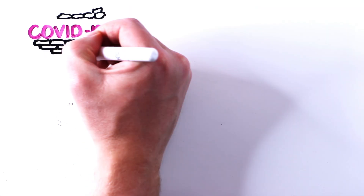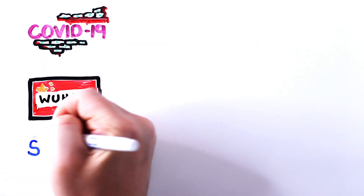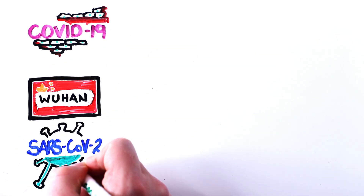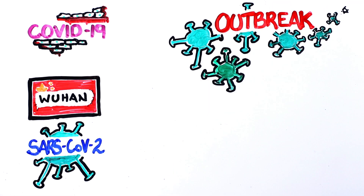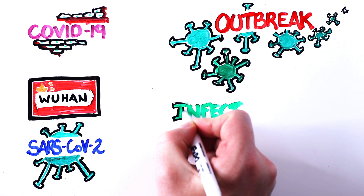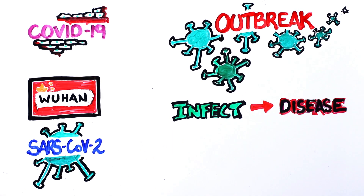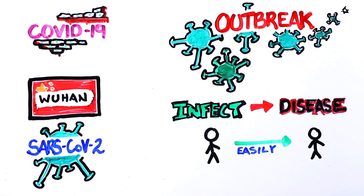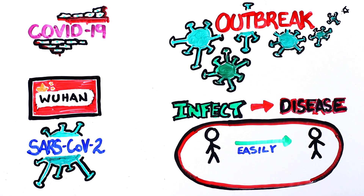In order for a pandemic to occur, it needs to start with an outbreak. If we look at the disease COVID-19, the outbreak occurred in Wuhan, China, from the SARS-CoV-2 virus. A viral outbreak requires a new virus that humans do not have immunity to, that is able to infect humans, cause disease in humans, and spread from human to human quite easily. If the disease spreads within an initial community or within a specific region or country, it's known as an epidemic.